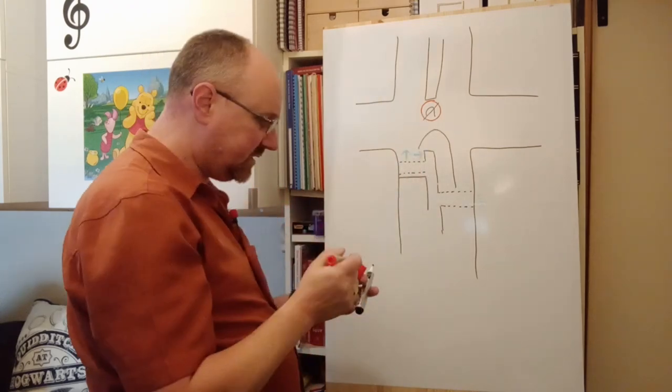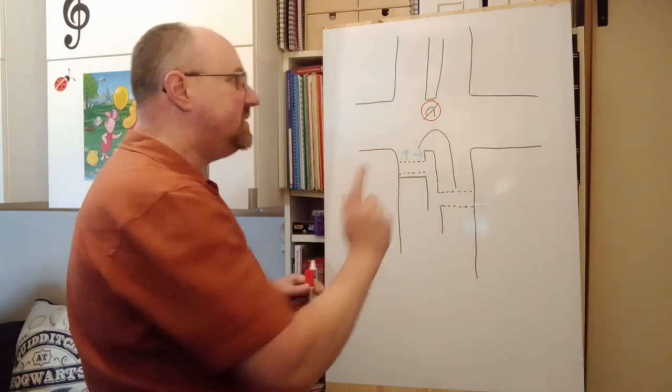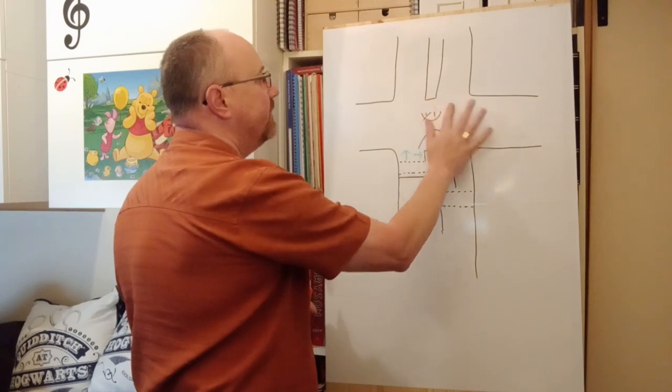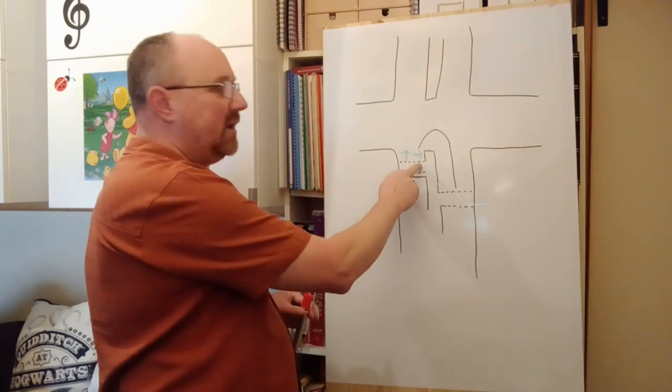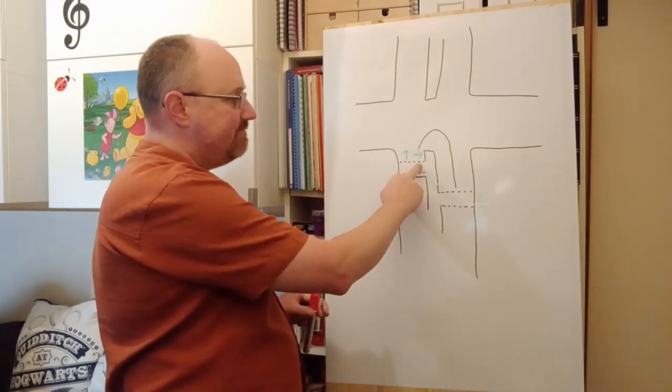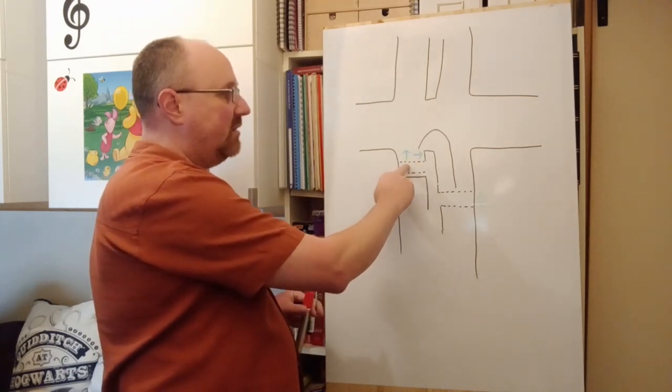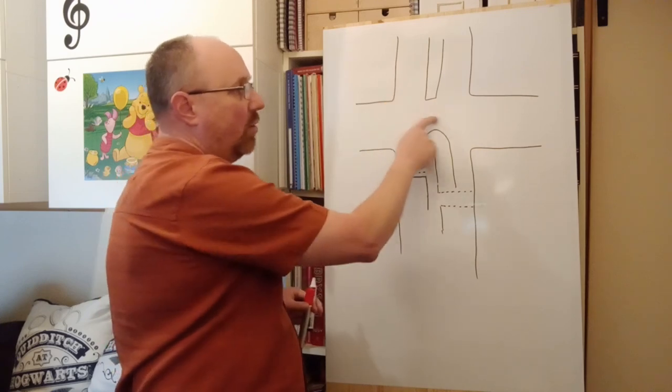So there's the no u-turn sign. But even if there isn't a no u-turn sign, you can only proceed in the direction of the arrow, and we've got permission to go straight on or right.